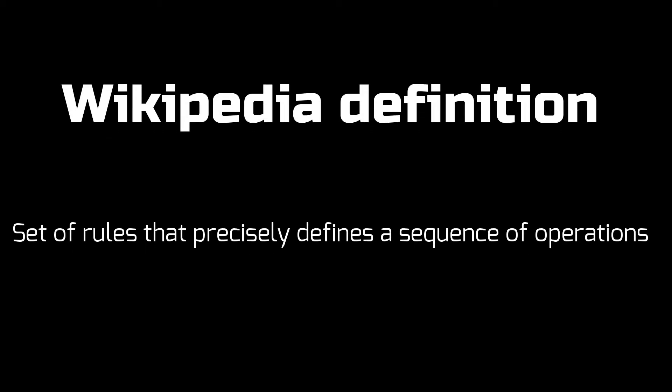Algorithms. Every one of us might have heard this word before. As per Wikipedia, an algorithm is defined as a set of rules that precisely defines a sequence of operations. So an algorithm is nothing but a set of instructions — instructions that will help us to solve a problem, perform a task, or devise a solution.